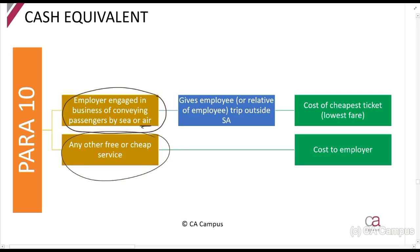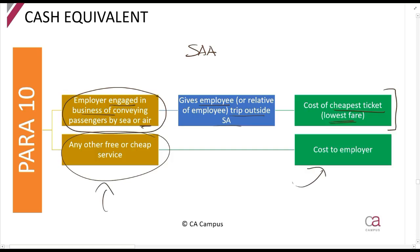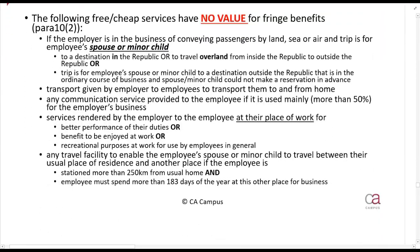If the employer is engaged in the business of conveying passengers and gives an employee a trip outside of South Africa — for example, I work for SAA and they tell me I can fly to America for free — then the value of the fringe benefit is the cheapest ticket on that flight. In any other situation, it is the cost to the employer.